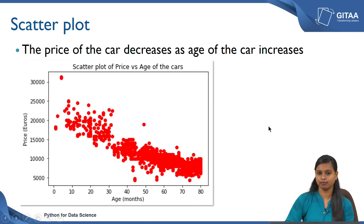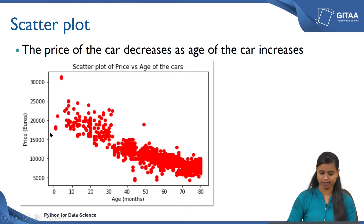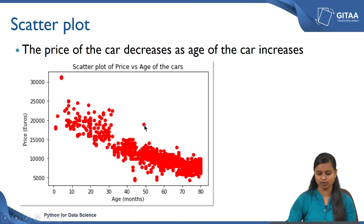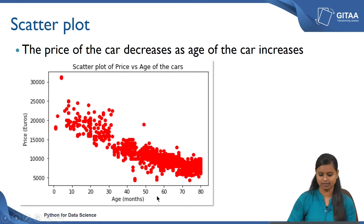Here is the scatter plot showing the relationship between price and age of the car. The x axis represents age and the y axis represents price. As the age increases the price decreases. The individual points shown are called markers. The vertical lines on the axes are called ticks, and values like 60, 70, 80 are called tick labels. On the x axis these are called x ticks and x tick labels, and on the y axis they are called y ticks and y tick labels.